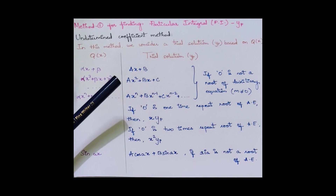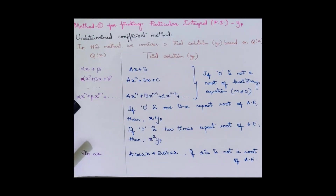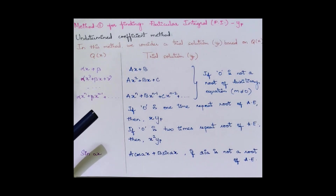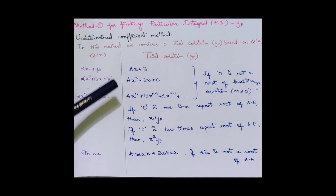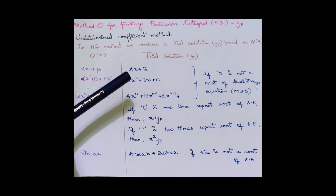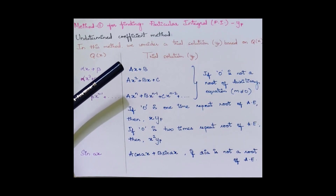This is the case when zero is not a root of the auxiliary equation. If zero is a one-time repeated root of the auxiliary equation, then you have to multiply x with the above obtained format. If it's two times, then multiply with x². If it's n times, multiply with x to the power of n.